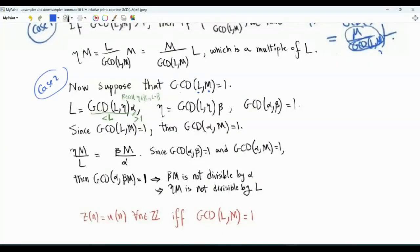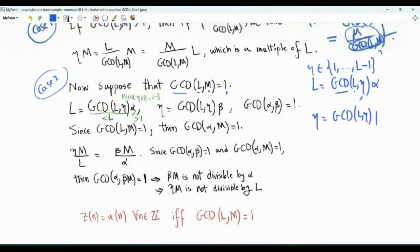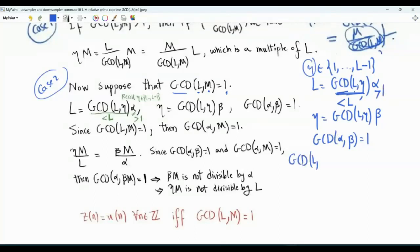The second case is when L and M are coprime, so gcd(L, M) equals one. Let's write L as gcd(L, eta) times some integer alpha, and eta as gcd(L, eta) times integer beta, where gcd(alpha, beta) equals one. Since eta is strictly less than L, this gcd is strictly less than L. L equals this gcd times alpha, and since the gcd is strictly less than L, alpha must be strictly greater than one. Since alpha is a factor of L and gcd(L, M) equals one, we have gcd(alpha, M) equals one.